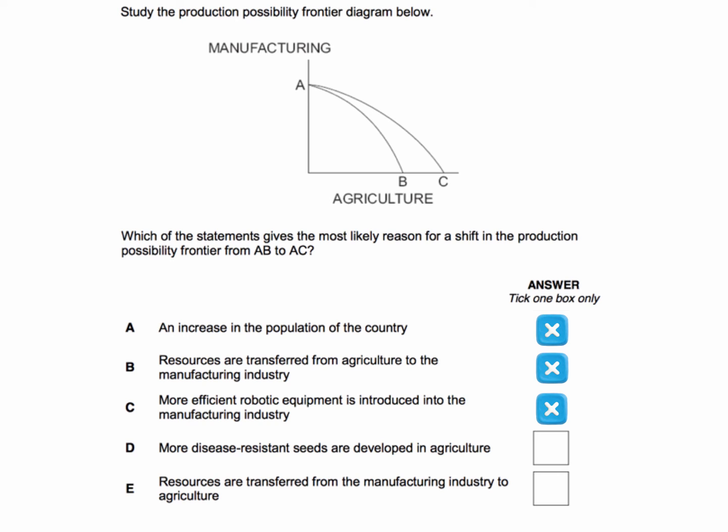Answer D: more disease-resistant seeds developed in farming — that sounds quite promising. It should increase productivity in the farming sector; yields would be more resistant to extreme climate, and a rise in factor productivity does cause an outward shift in the PPF. This example is specific to agriculture, and there's been a specific outward shift in the PPF in farming. So D is correct.